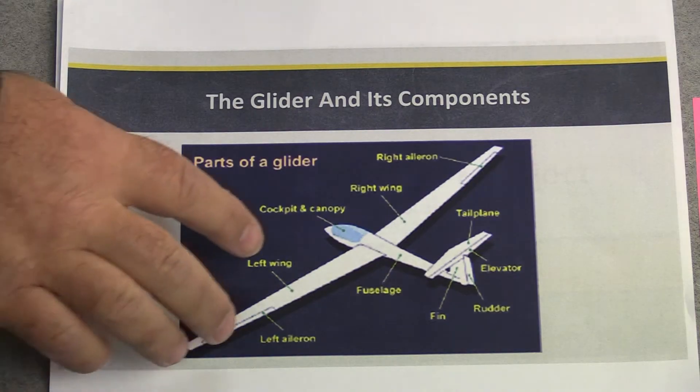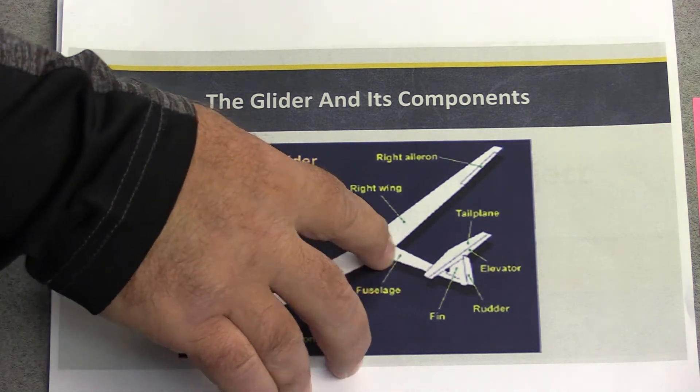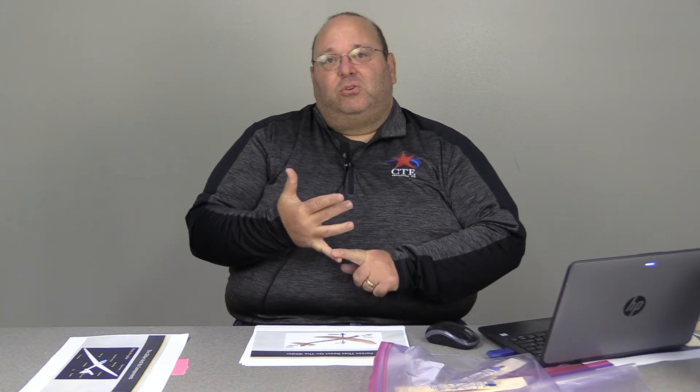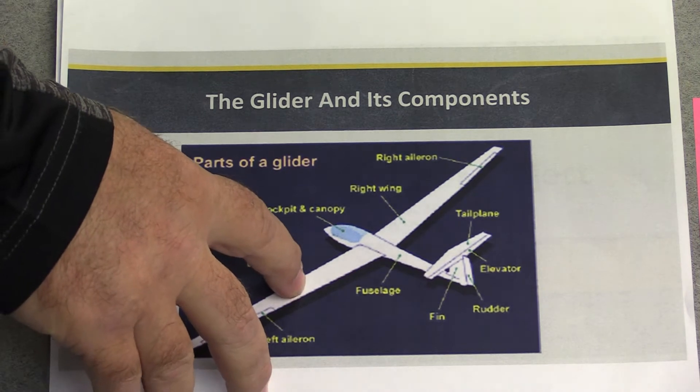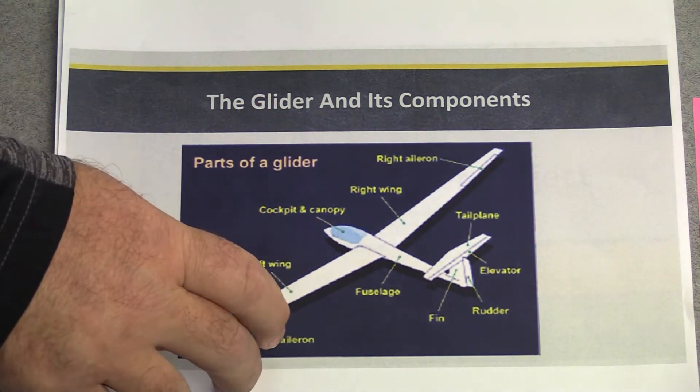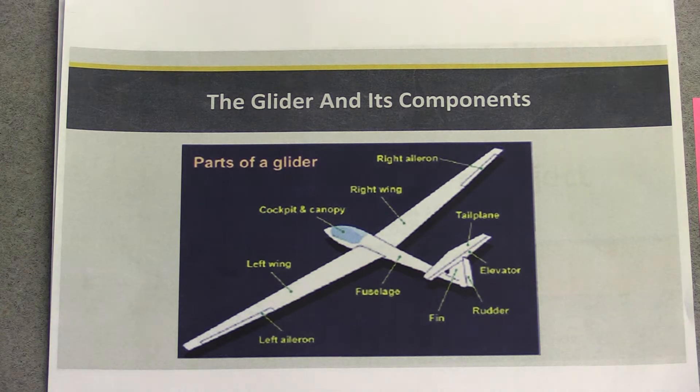On gliders, there are four main components needed to fly. The first is the fuselage — the long portion of the glider where the controls are and where the pilot and co-pilot sit. You also have the left and right wings, which include ailerons. Ailerons allow the glider to go to one side or the other, enabling it to turn left or right.